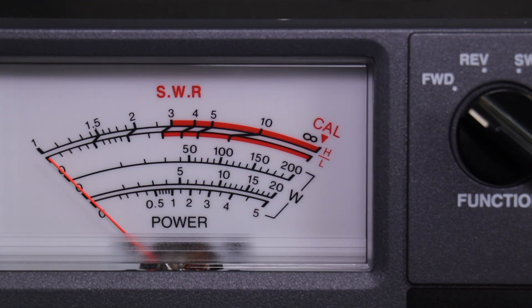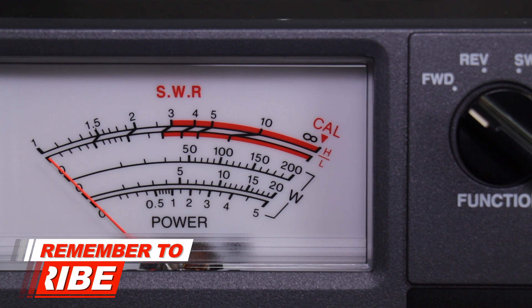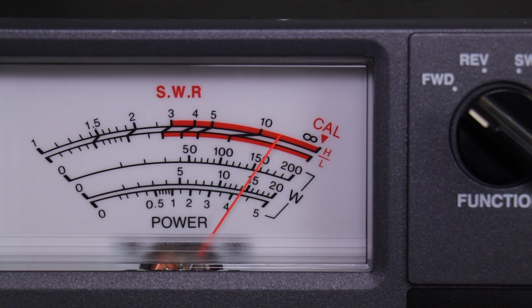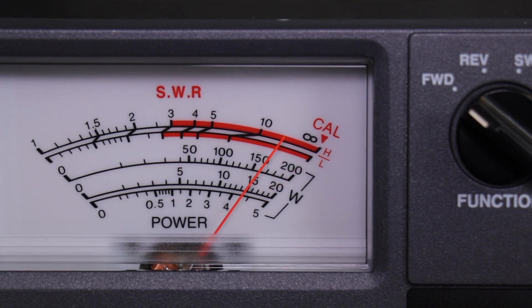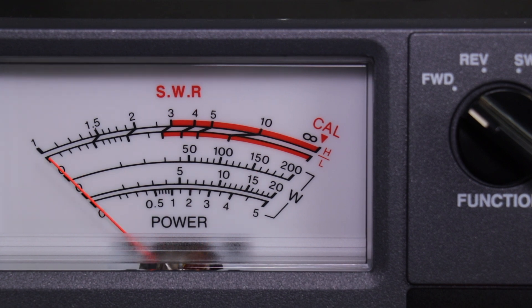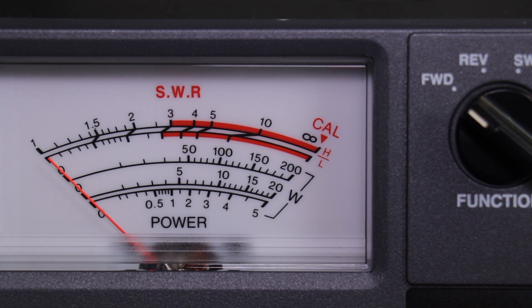On the 873 I have the function set to forward at 5 watts and the radio is also set for 5 watts. It looks like we're getting just shy of 4.5 watts. Now the meter is still set for forward. The power rating is at 20 watts and I have the radio set to 10 watts. It looks like we're right at about 10 watts, maybe a little shy.